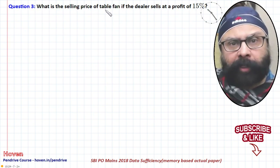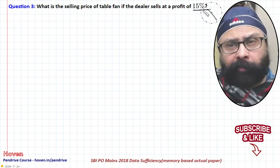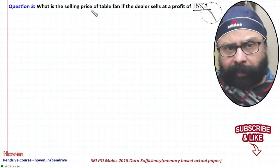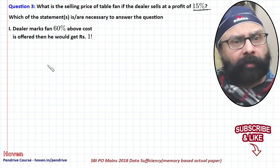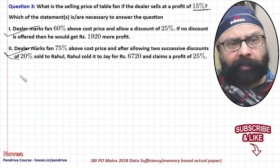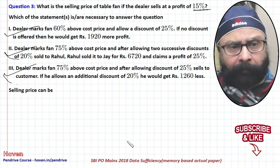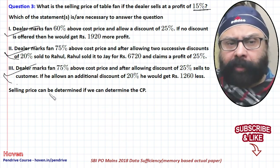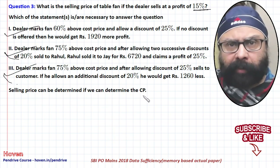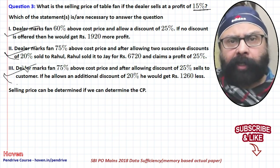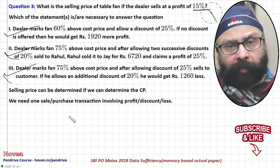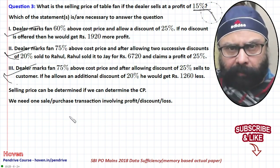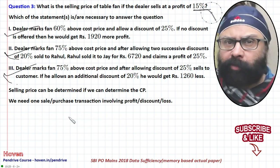The next question: what is the selling price of the table fan if the dealer sells it at a profit of 15 percent? The profit percentage is given; we need the selling price, which requires knowing the cost price. We need one transaction — sale, purchase, or discount — that will help us obtain the cost price.